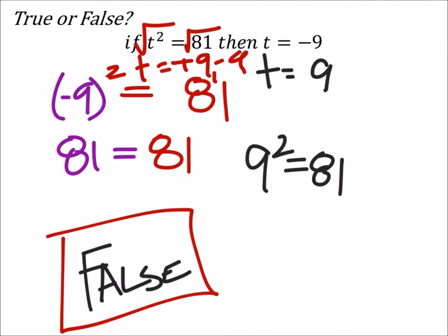Now, if it asked us if t equals negative 9 and t squared equals 81, that would be true because it's the if, that's the condition. If t squared equals 81, then that's what we're seeing what's true, then t equals negative 9.